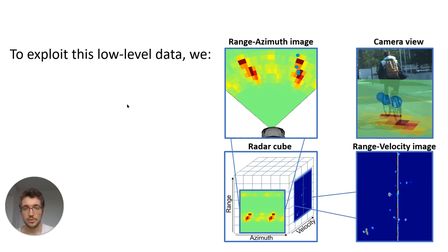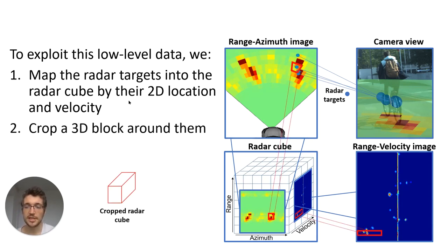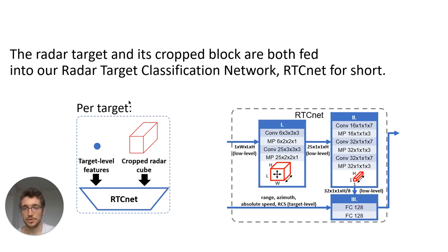To exploit this low-level data, first we map the radar targets to this radar cube, both in the 2D location, so azimuth and range, and in the velocity dimension. And then we crop a 3D block around them, so a part of the radar cube is cropped. Afterwards, the target itself and this cropped block are both fed into the radar target classification network called RTCnet.